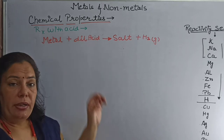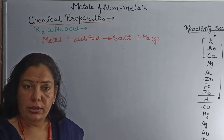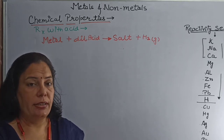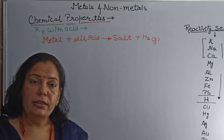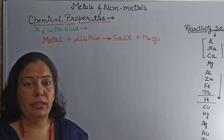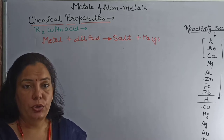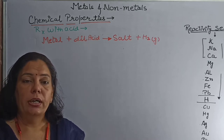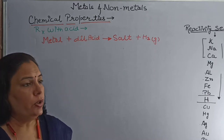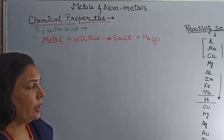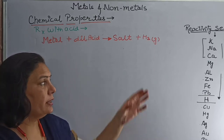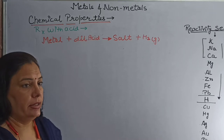We take mineral acid for this reaction. These mineral acids are hydrochloric acid (HCl), sulfuric acid (H2SO4), and nitric acid (HNO3). Let us try to write down the reaction of these metals with acids.